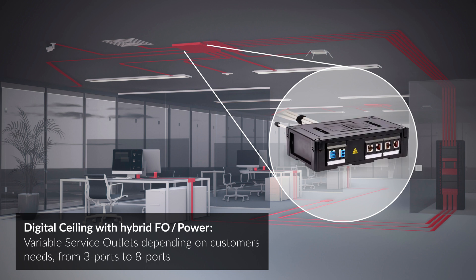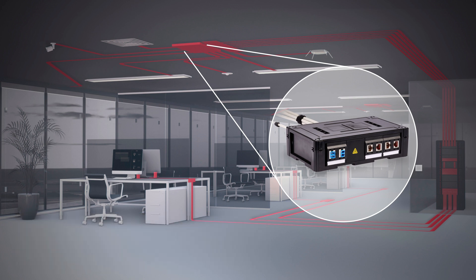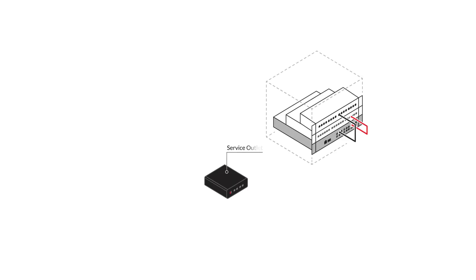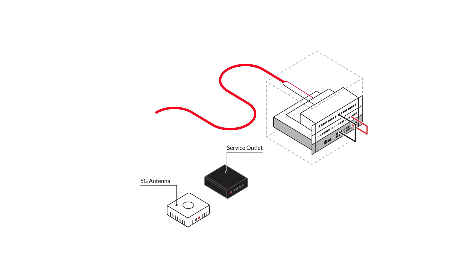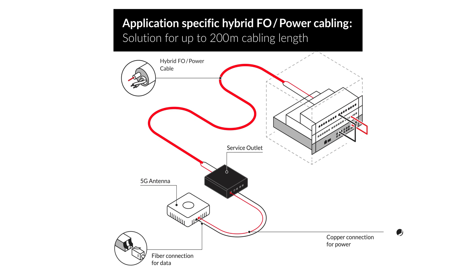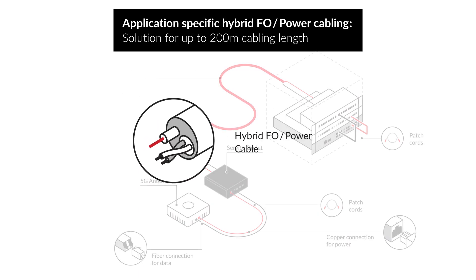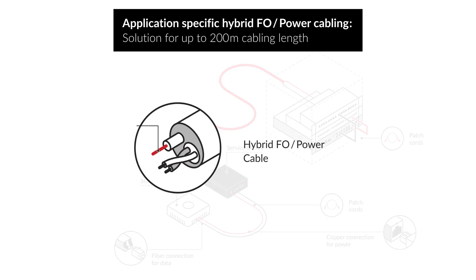To future-proof the solution and provide maximum fail-safe, the minimum requirements can be doubled, resulting in two times LC duplex and four times RJ45 connections. If a digital ceiling with copper LAN cables is not desired or not possible, R&M has developed an application-specific hybrid cable. This hybrid fiber optic and power cable combines a two-fiber single mode round cord with two AWG-16 copper wires under a sturdy outer jacket.